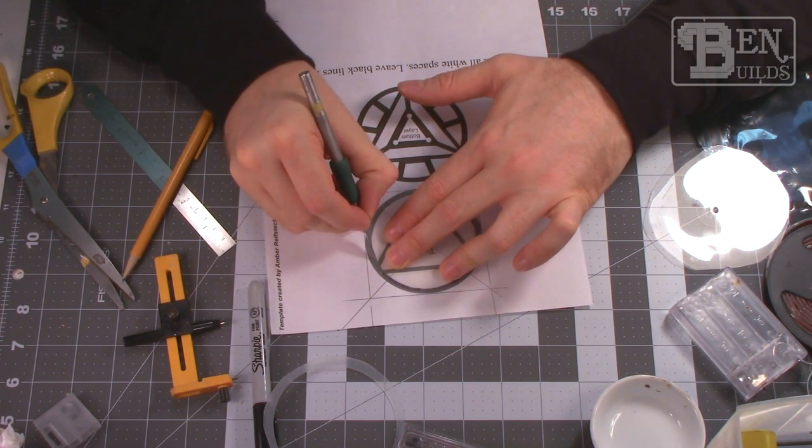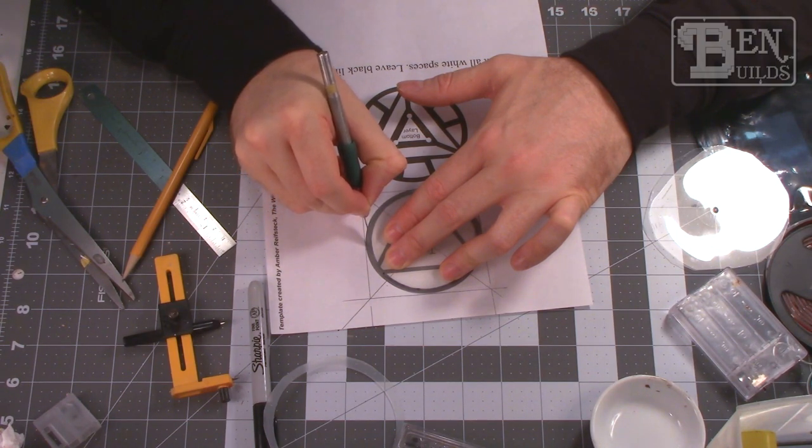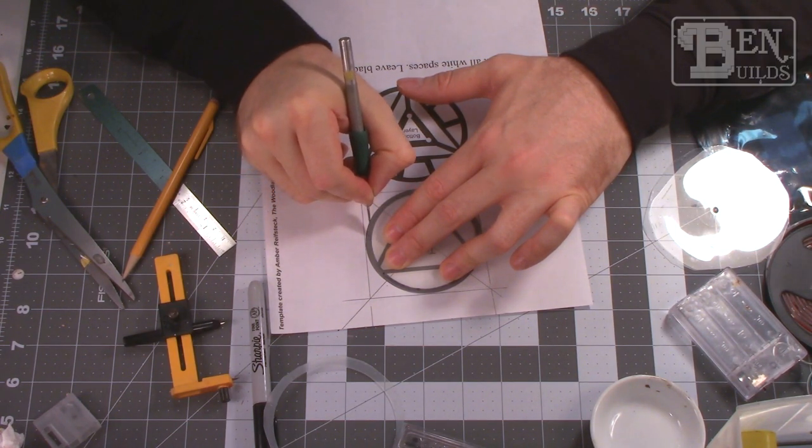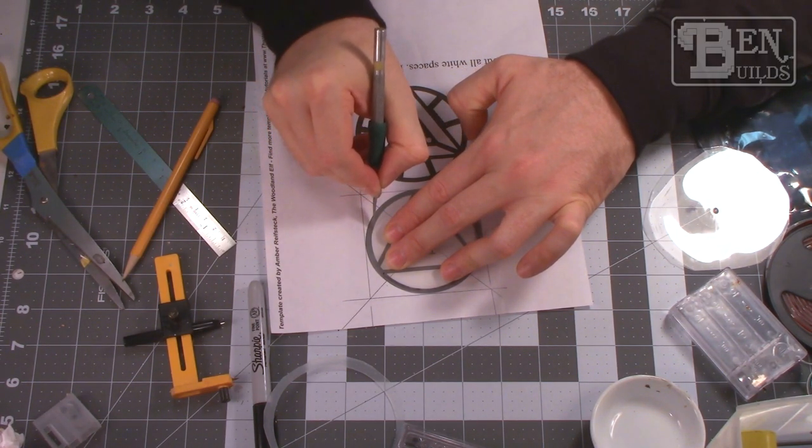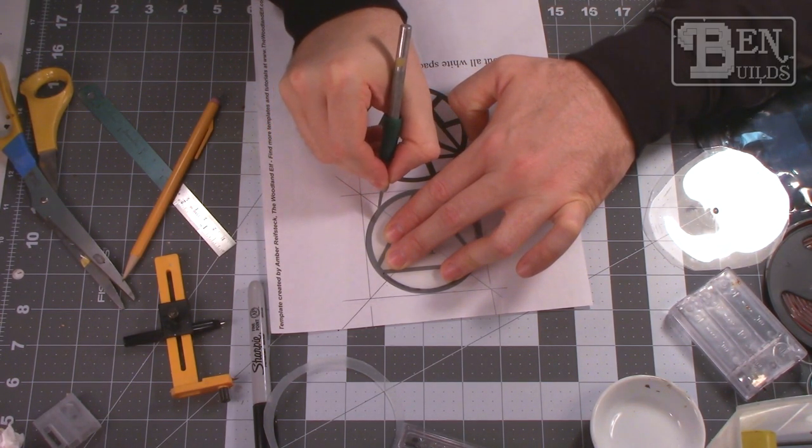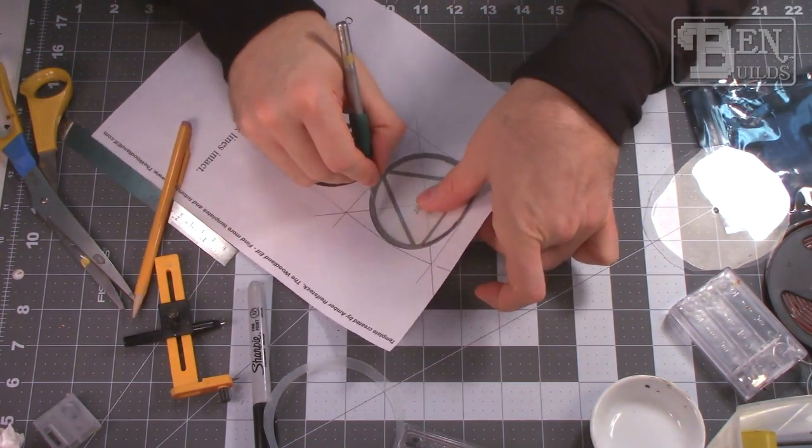I'm just going to start cutting these out and remember this is going to be underneath the shirt so you're not really going to be able to see a lot of the fine details. You're just going to want that backlight and that shape and design kind of blocking out certain parts of the light. So let's cut out the rest of these circles and get the rest of these shapes all squared away.